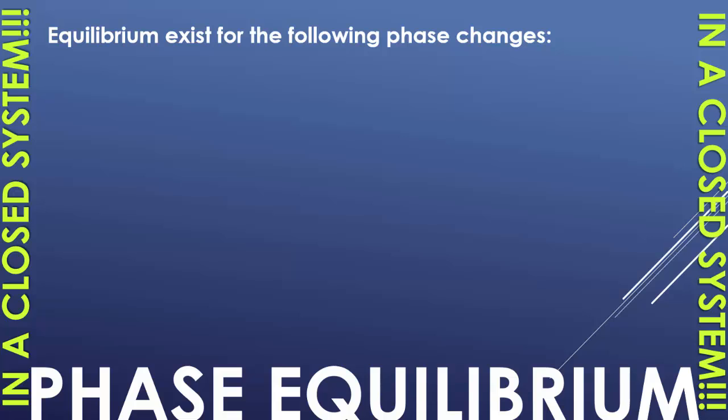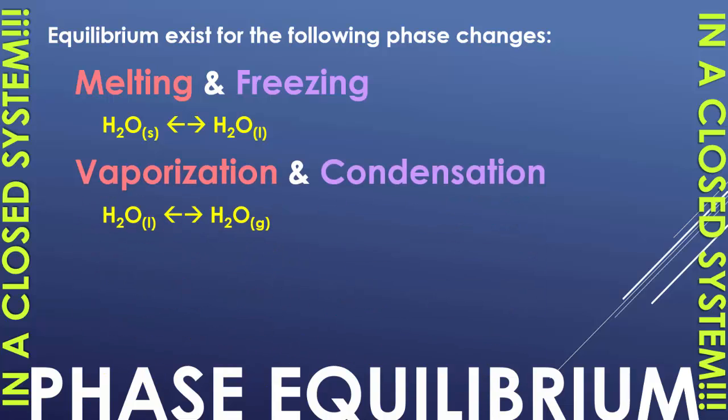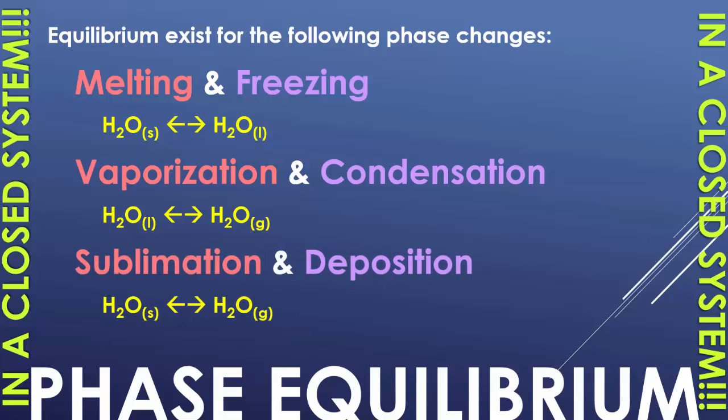Equilibrium exists for the following phase changes. As we said in our last unit, melting and freezing occur at the same point in time, vaporization and condensation happen at the same point in time, and then sublimation and deposition will happen at the same point in time, but in equilibrium in a closed system.